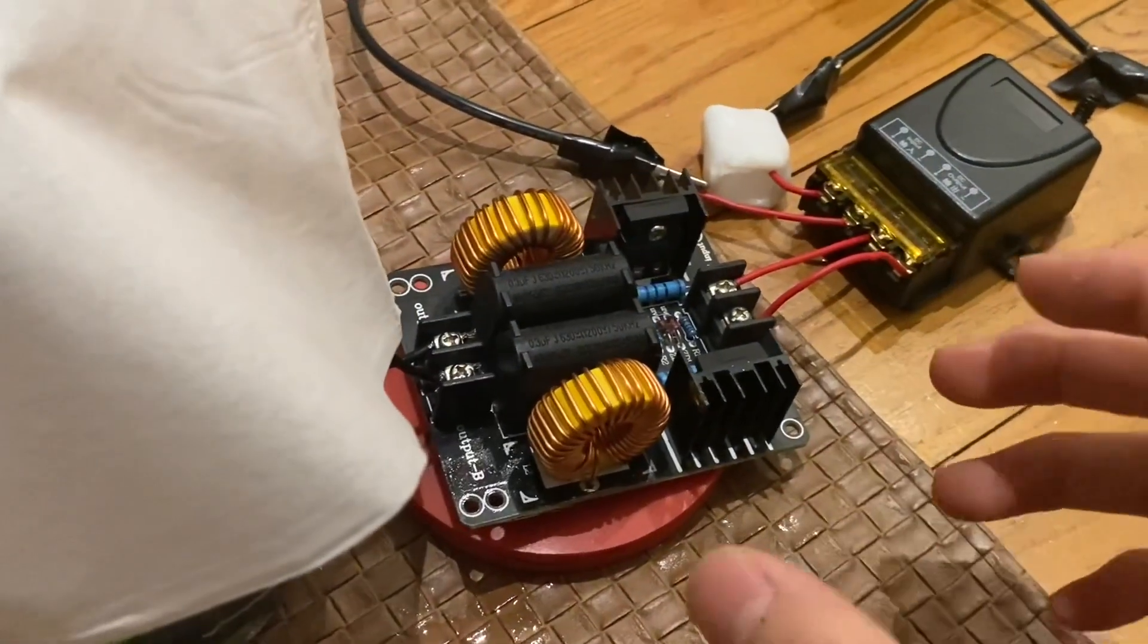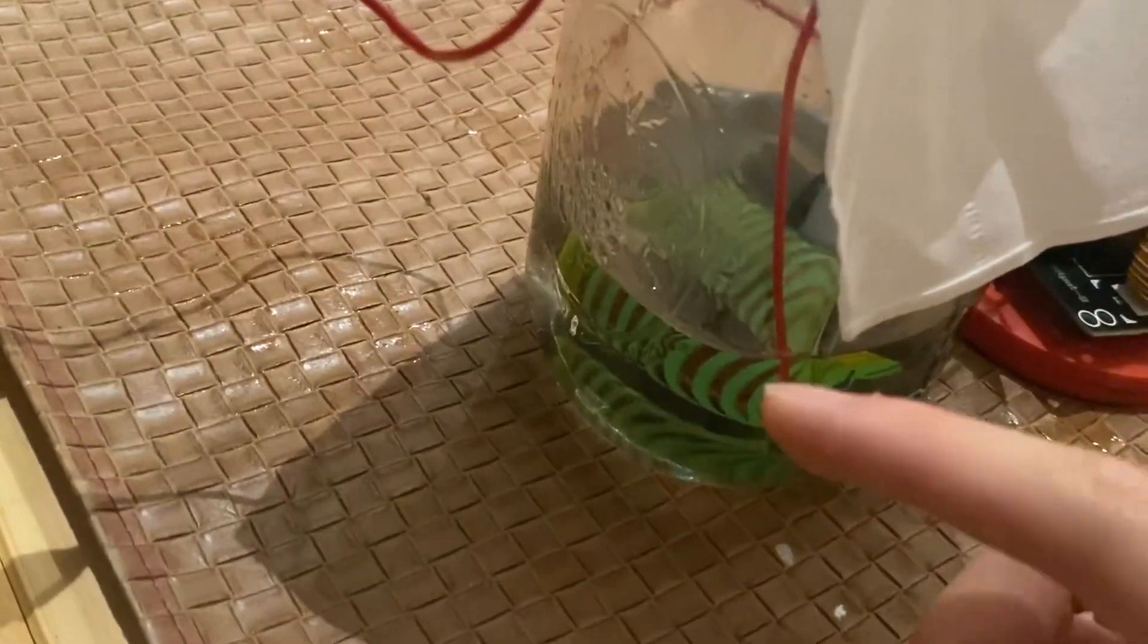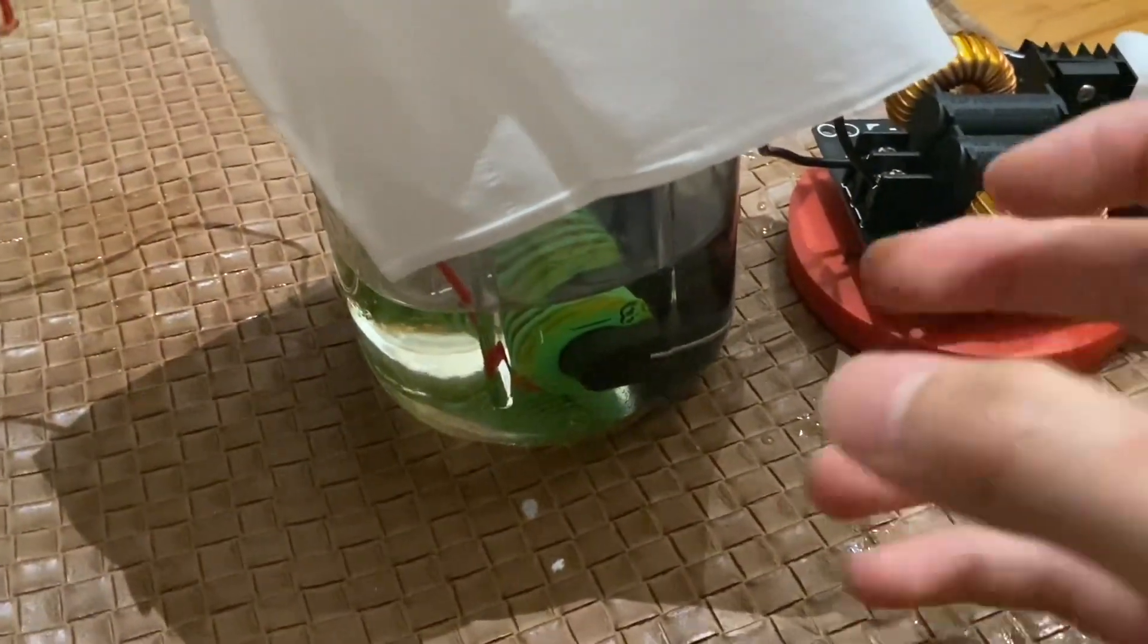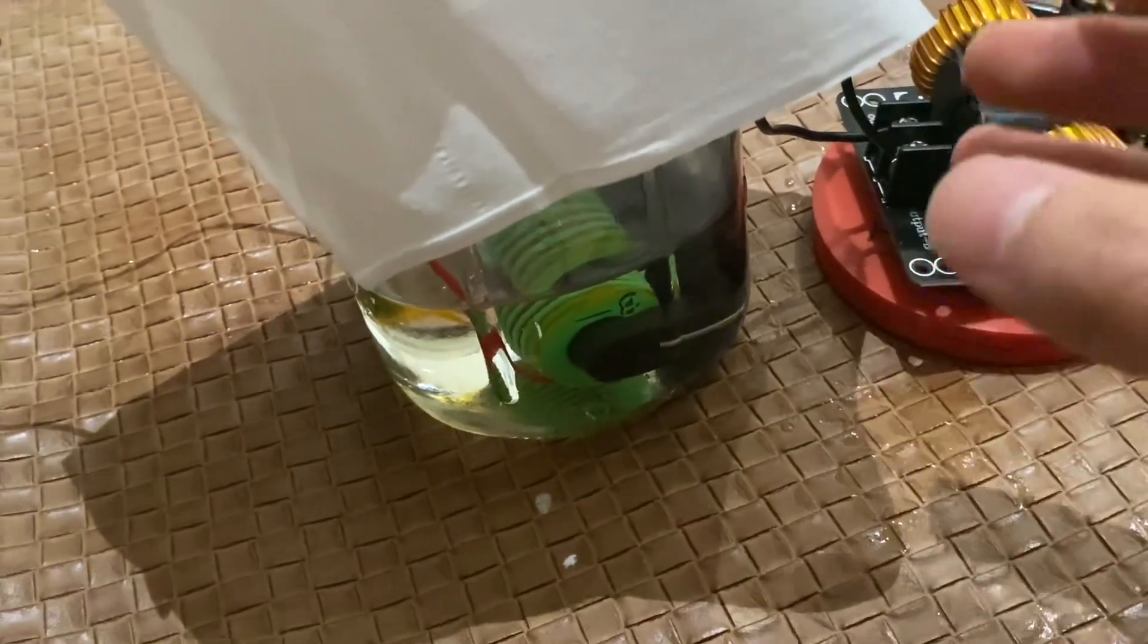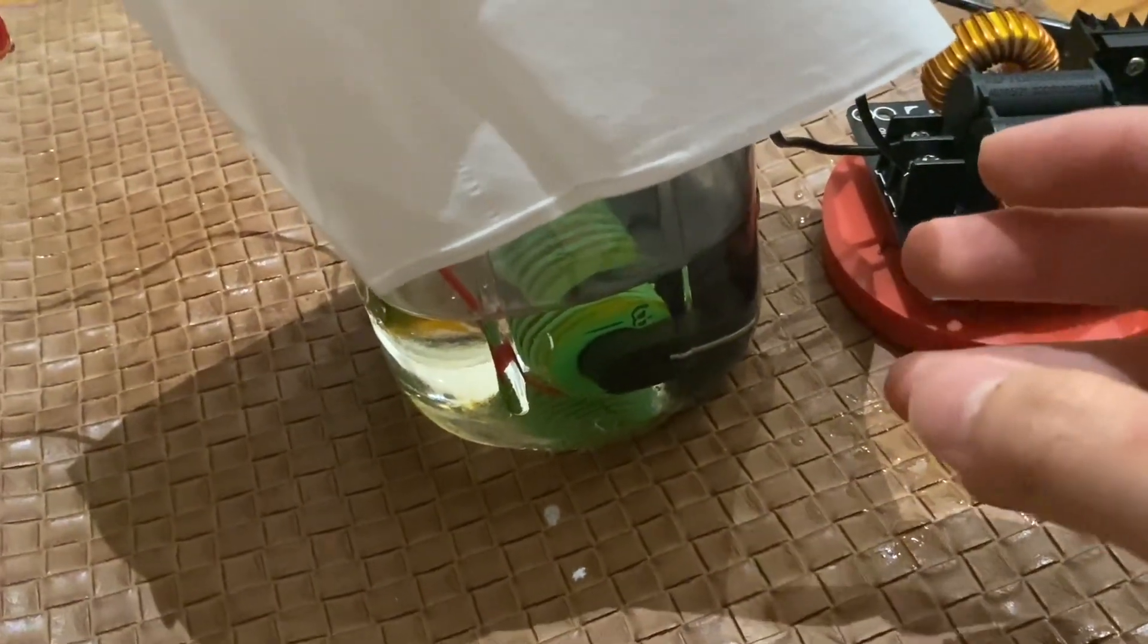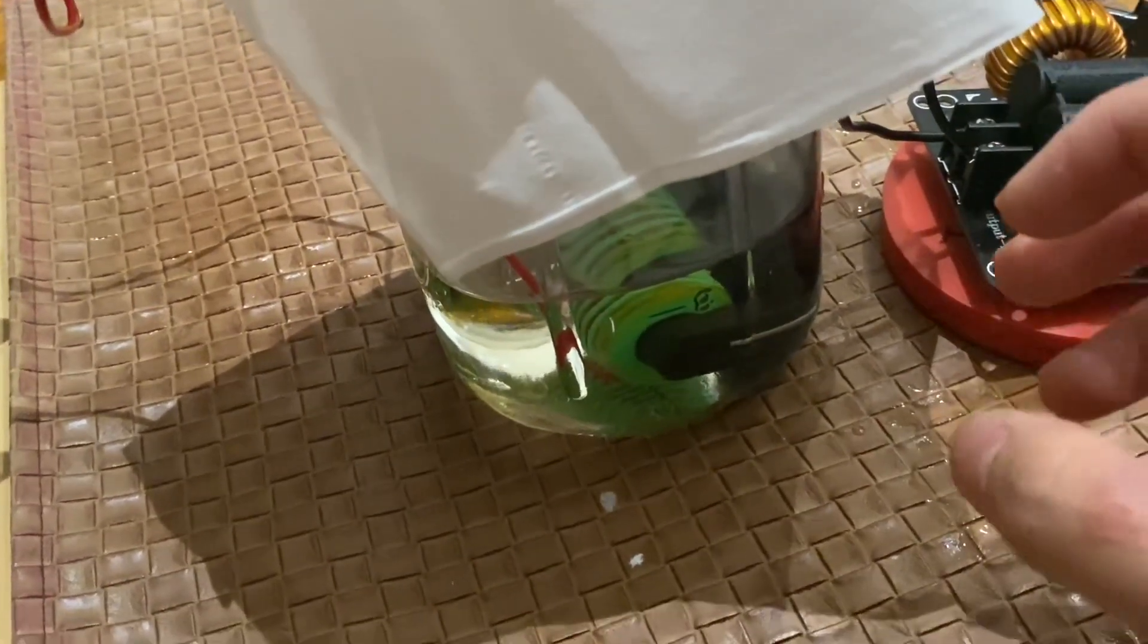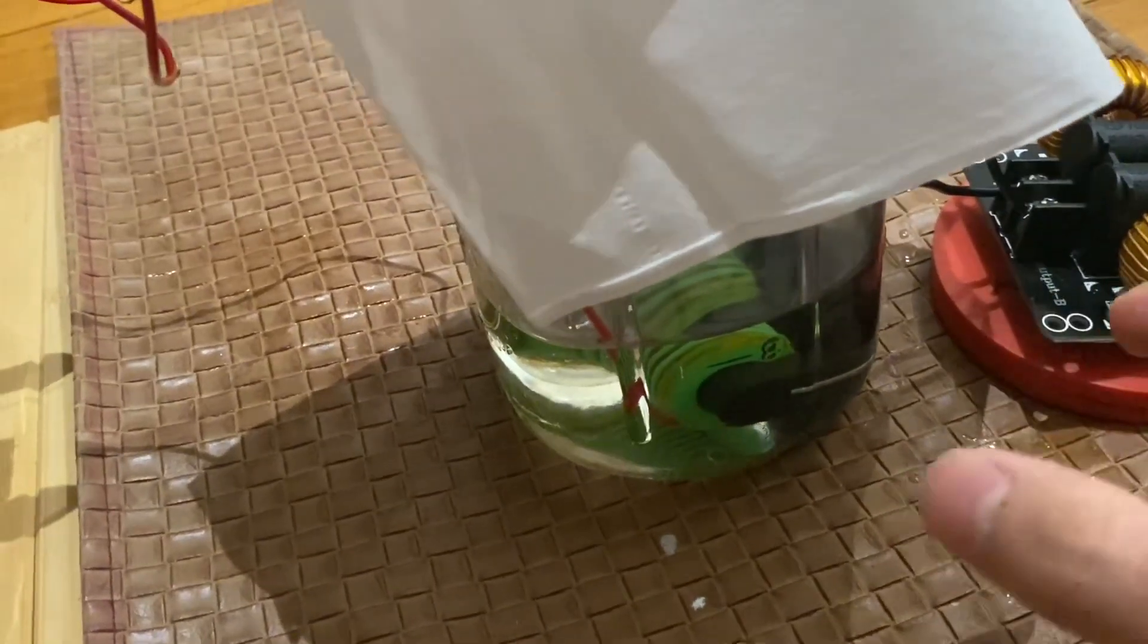That is fed into a ZVS driver and that drives the flyback transformer. Now, the ferrite core is from a flyback transformer, but the secondary I've replaced with my own 3D printed bobbin. I've calculated it so that the output is around 2.2 kilovolts.